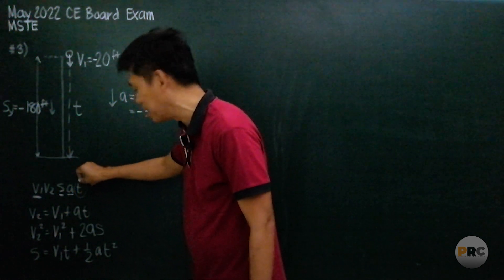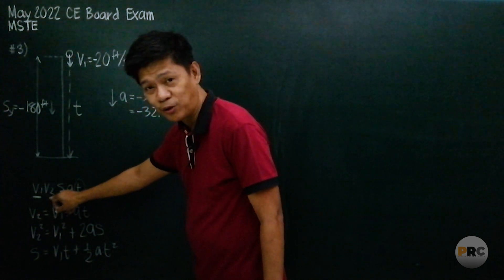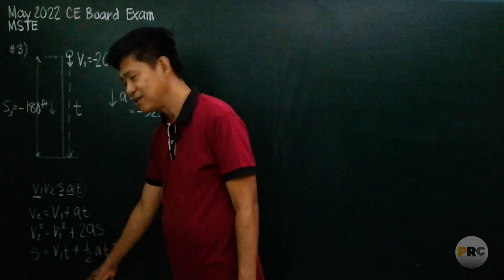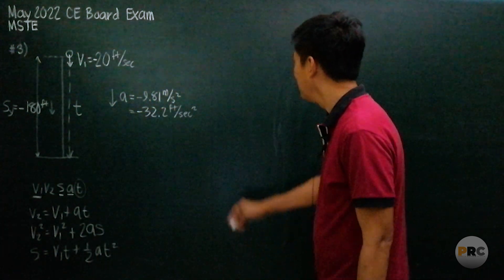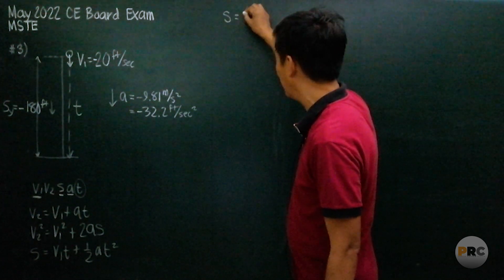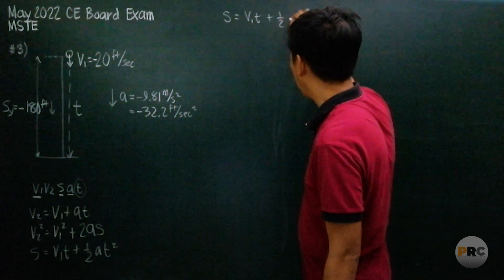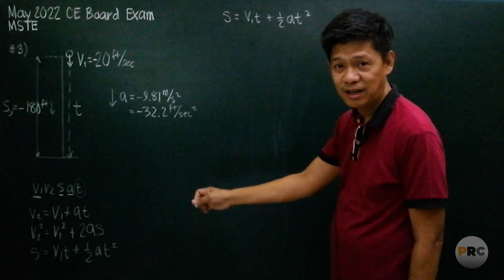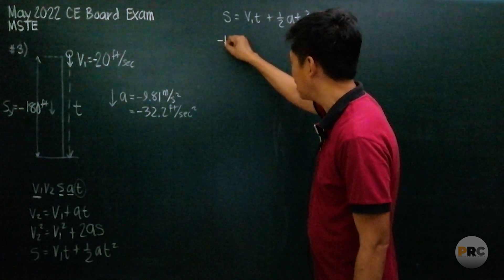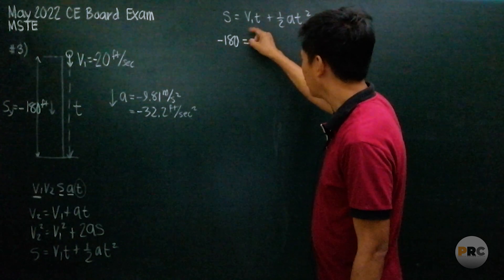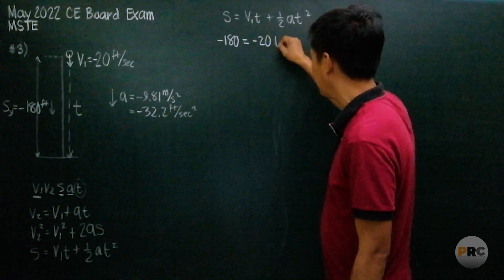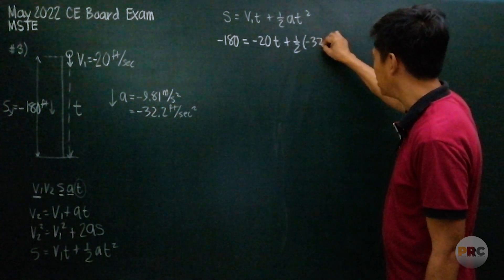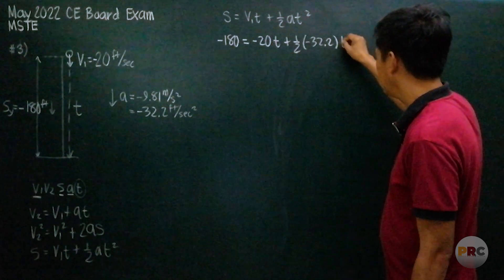Of these five variables, we know v1, we know s, we know a, and we are solving for time. We are not interested in v2. Which of the three formulas doesn't have v2? The third one. So we will use s = v1·t + ½·a·t². Substituting: s_y = −180, v1 = −20, a = −32.2. So: −180 = −20t + ½(−32.2)t².